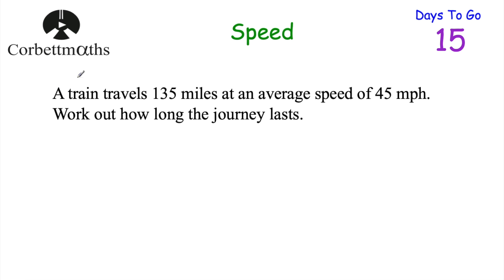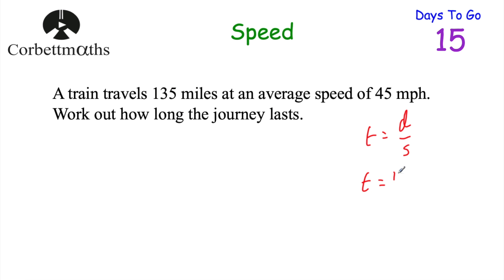Our next question says: a train travels 135 miles at an average speed of 45 miles per hour. Work out how long the journey lasts. Feel free to press pause now. So we want to work out time — time is equal to distance divided by speed. We need to see how many 45s go into 135. So time equals 135 divided by 45, which is equal to 3. So the journey would last 3 hours. And if you got that, well done.